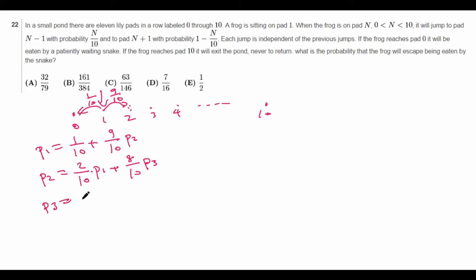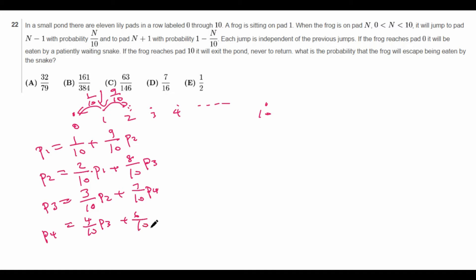We can see the pattern going on here. From pad 3, it jumps left with probability 3 tenths landing on pad 2, and right with probability 7 tenths landing on pad 4. Similarly, from pad 4 it's 4 tenths landing on 3 and 6 tenths landing on 5. We could keep going until p10, for which the probability of being eaten is 0, and then back-substitute all the way to p1.